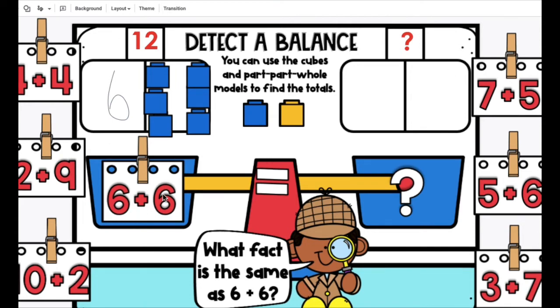Since this side is 12 and there's a balance, what is the whole number of this side? Also 12. So you are going to start out by finding the whole number on one side, so that you know what the whole number is on the other side.